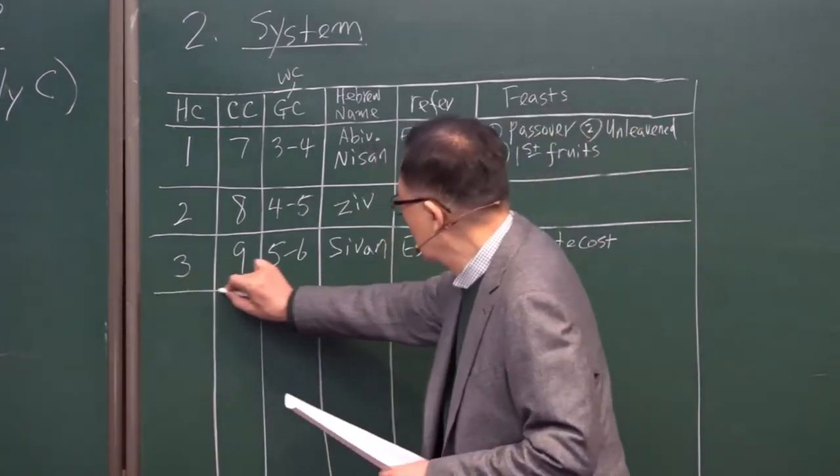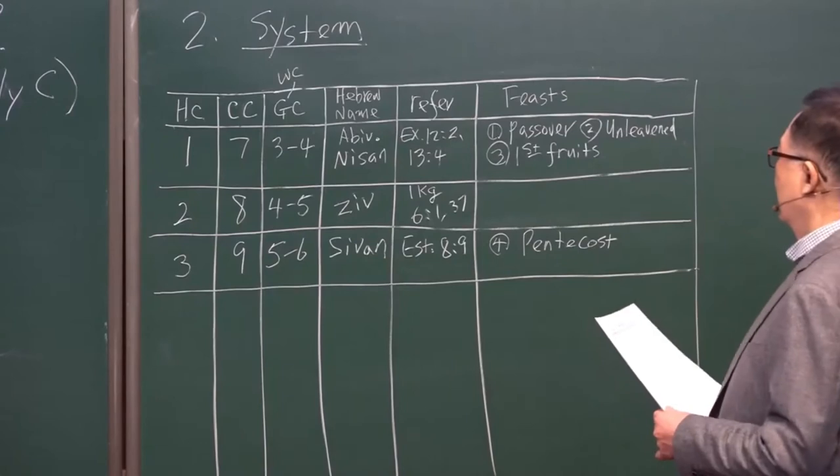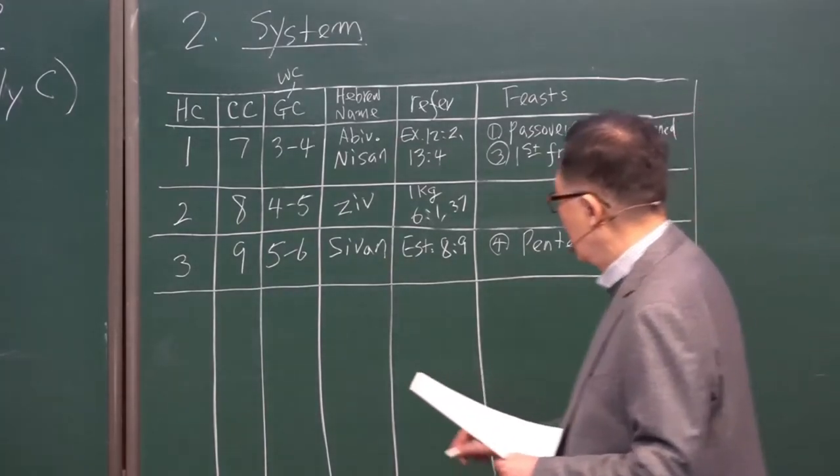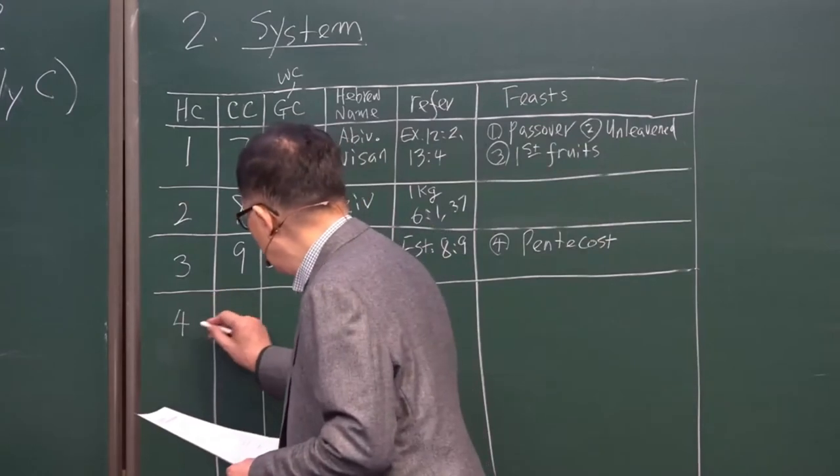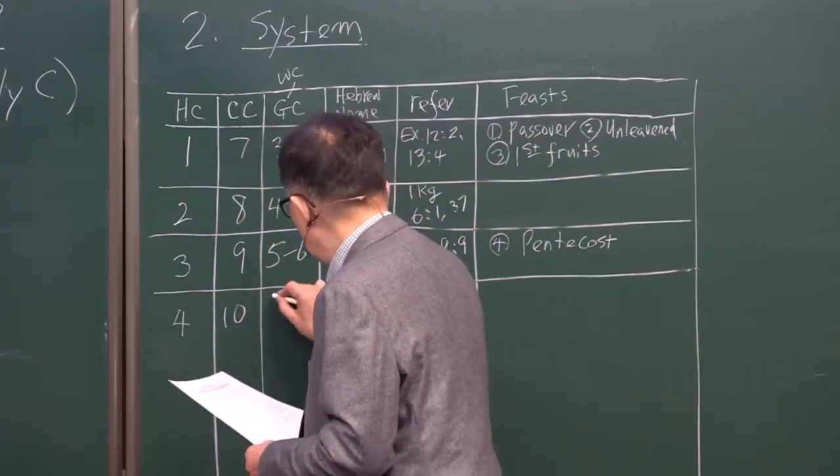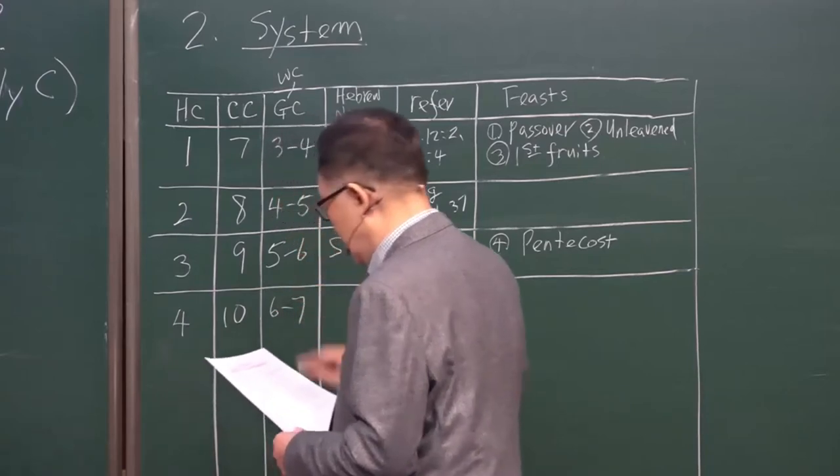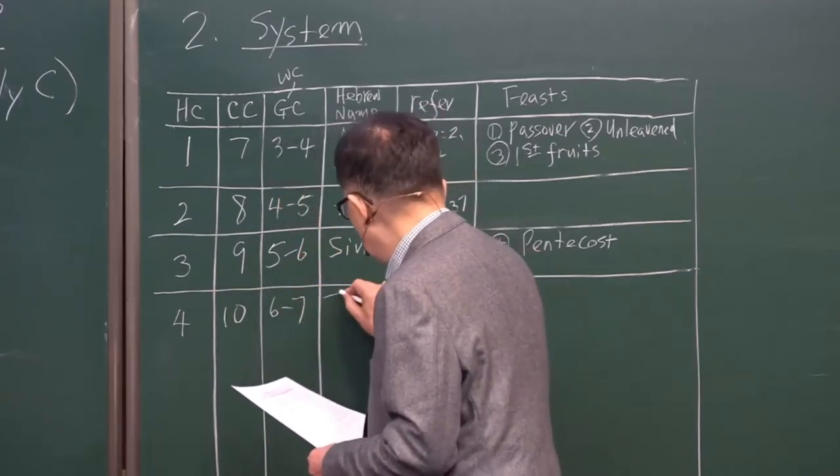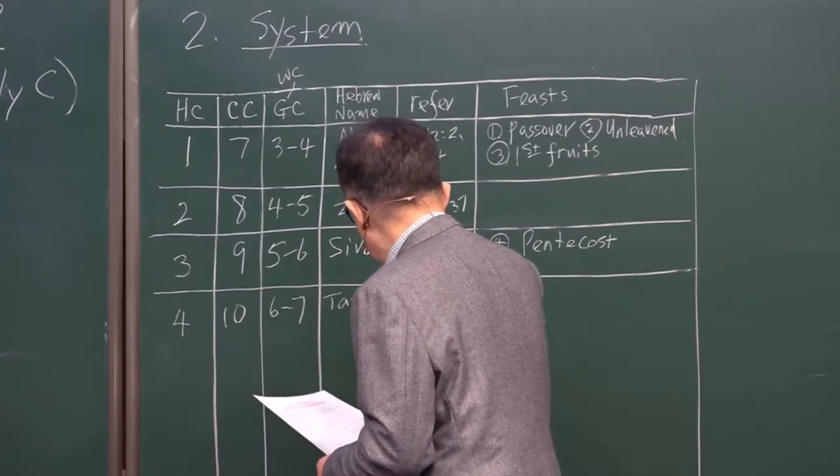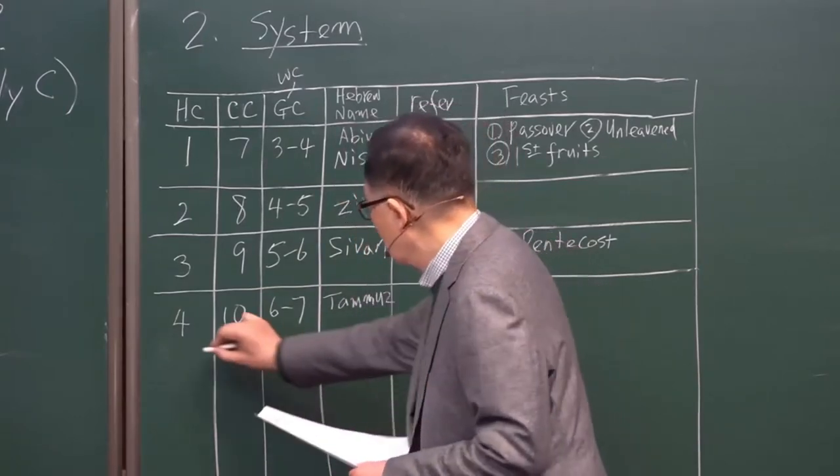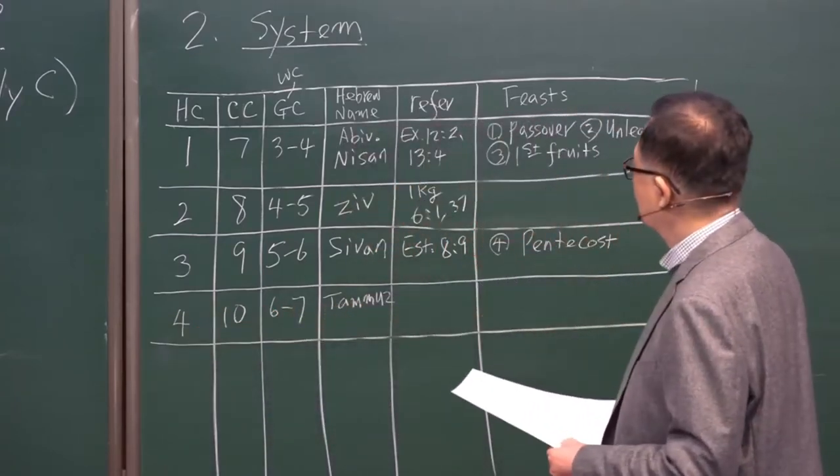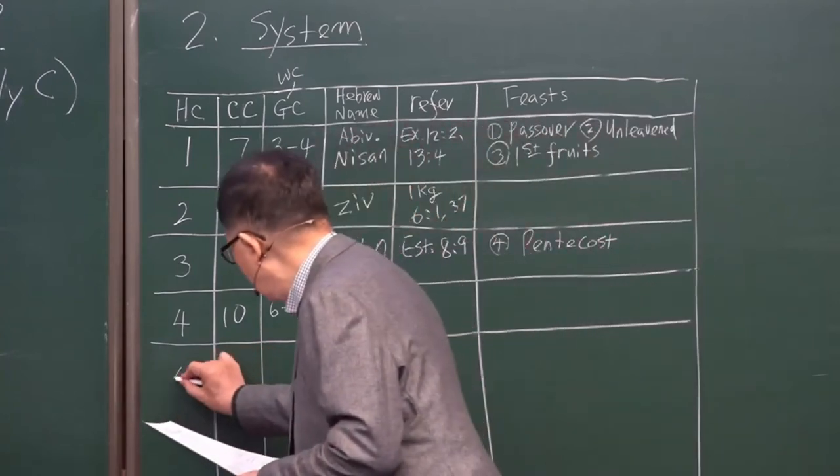And months four, ten, and six and seven, they call Tammuz. No feast in this month. And month five and eleven, seven-eight, seven-eight.